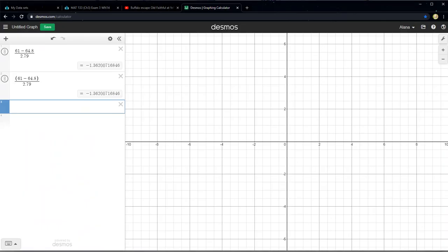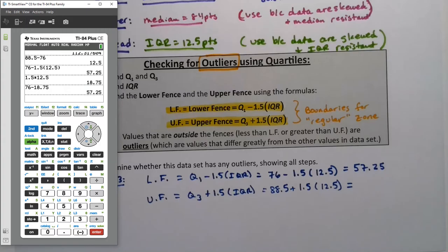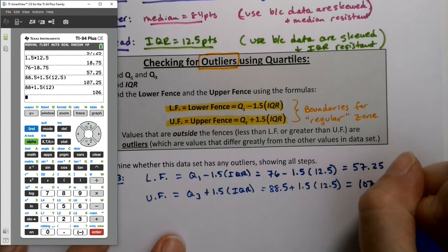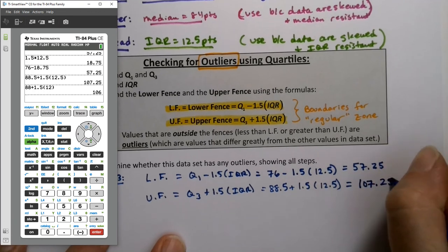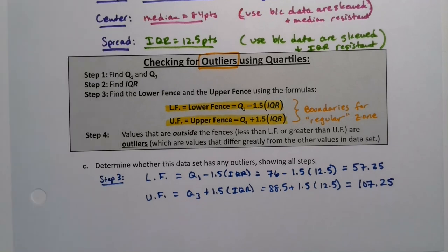Just to show you on Desmos, if you're working from a free application, it'd be the same, 76 minus 1.5, 12.5 in parentheses. It knows that it needs to multiply that. Now do it again, but 88.5 plus 1.5 times 12.5. Keep in mind, if you use the StatCrunch output, it would have been 88 and 12, so it would be a slightly different number. For our purposes, it'd be 107.25.